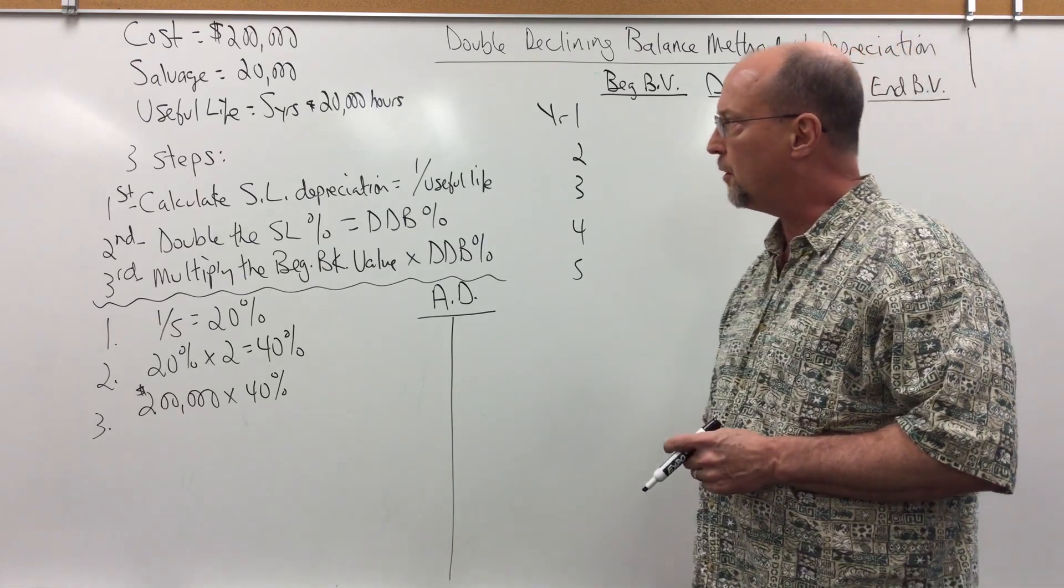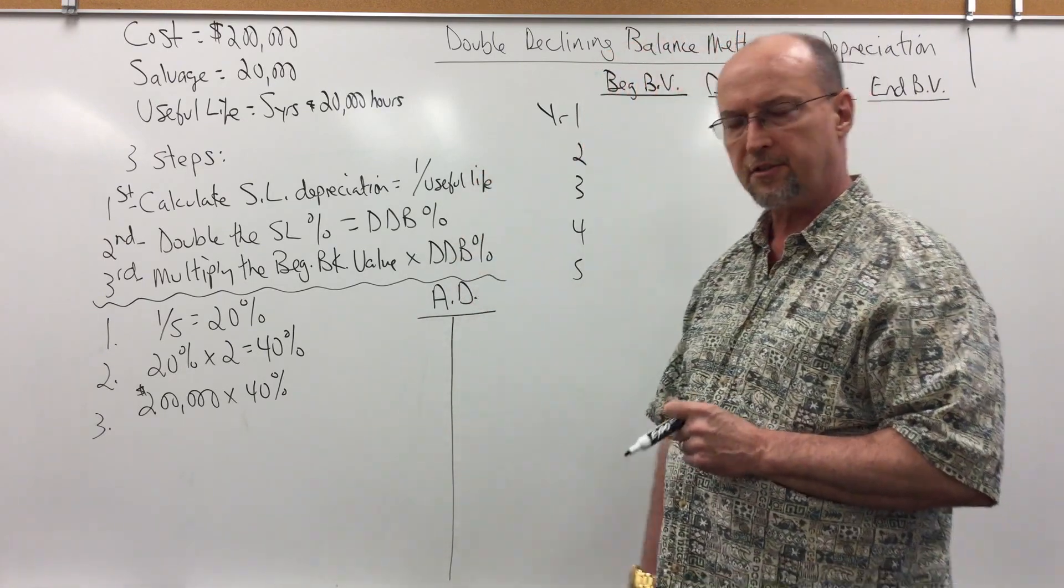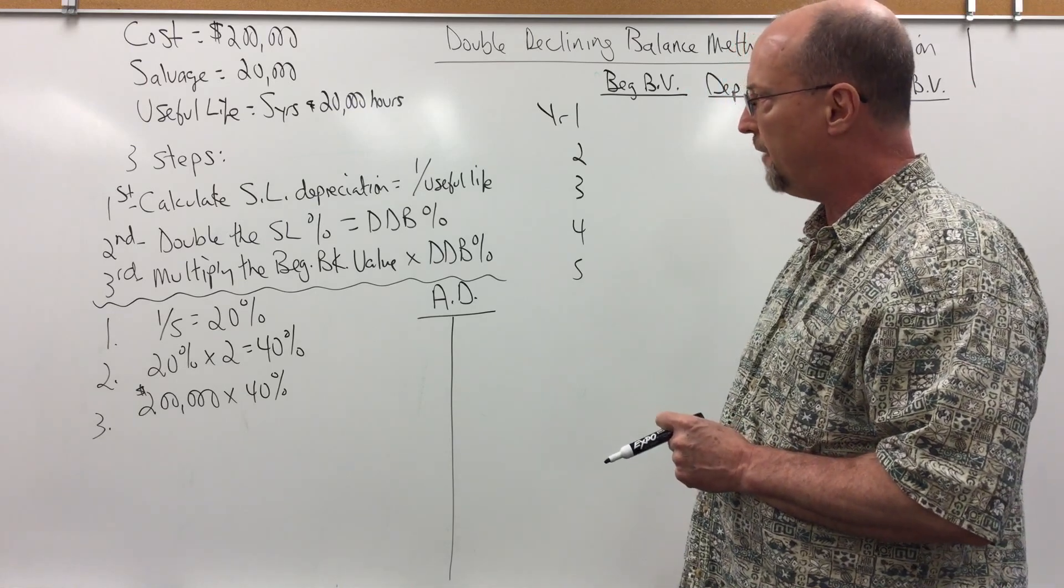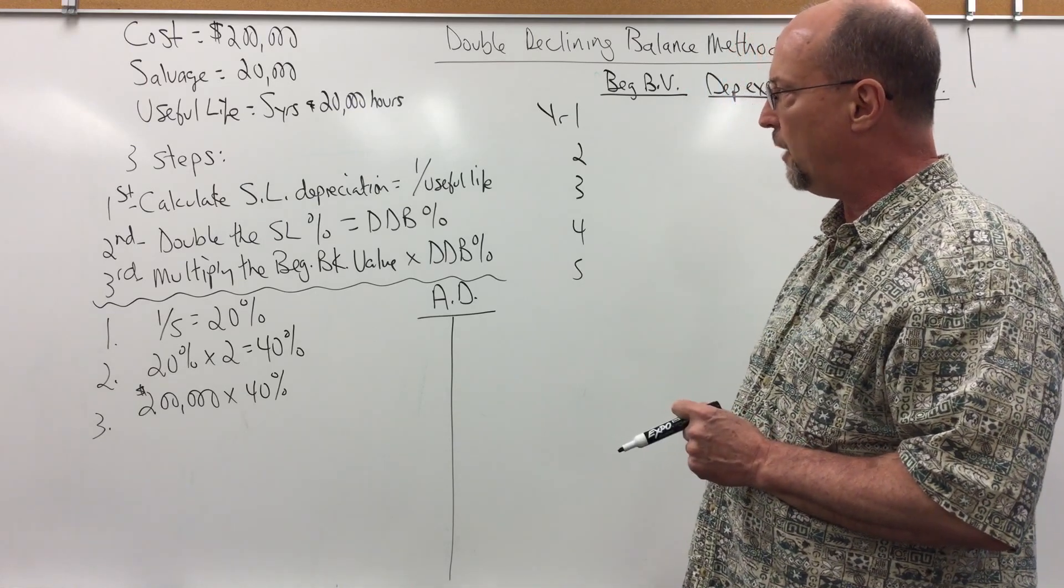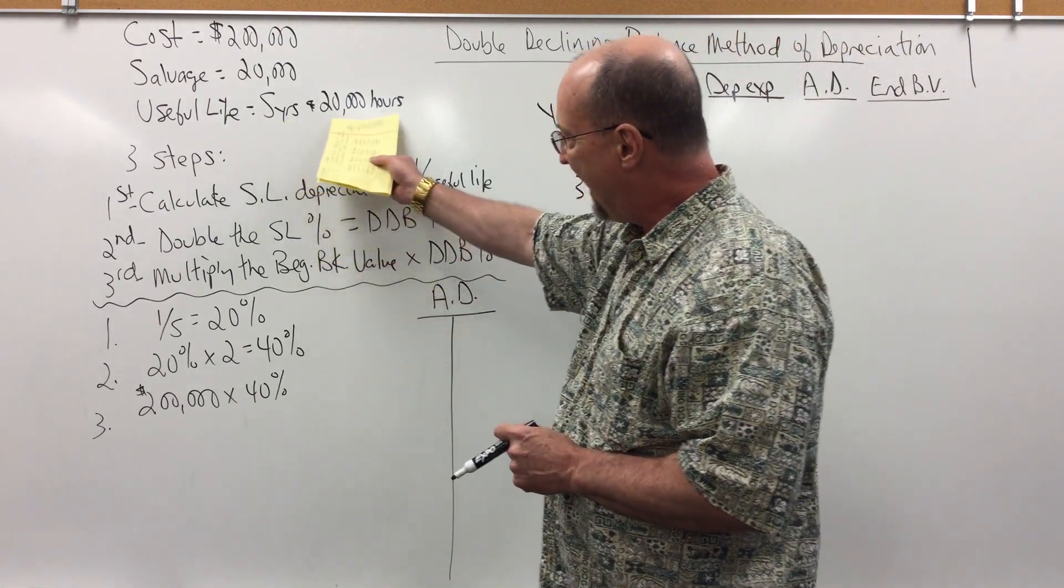Okay, so we're going to deal with the following information. Cost of the equipment is $200,000, salvage value is $20,000, useful life is five years and 20,000 hours. With this method we'll be using the years, not the activity.